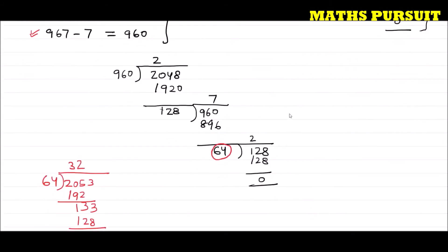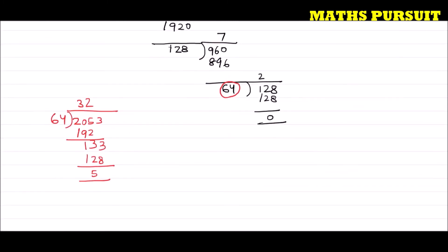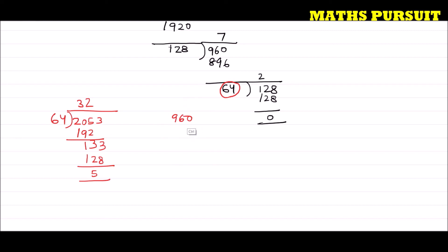Now let us test 64 with 967 to see whether we get a remainder of 7. Dividing 967 by 64: 64 times 1 is 64, leaving 327. Then 64 times 5 is 320, and we are left with a remainder of 7. This is exactly what the original question was saying — dividing 967 by 64 leaves a remainder of 7.